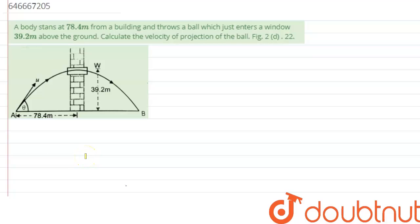A boy stands 78.4 meters from a building and throws a ball which just enters a window 39.2 meters above the ground. We need to calculate the velocity of projection of the ball.